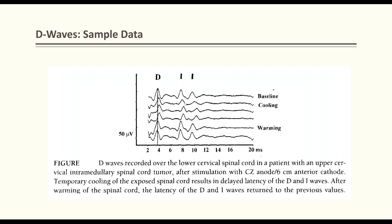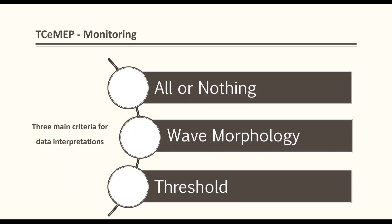When the spinal cord is cooled, the I waves disappear and there is a slight latency delay in the D wave, but after warming they return. Another important point: increasing stimulation activates deeper brain structures, so the D wave latency becomes earlier with higher stimulation intensity.